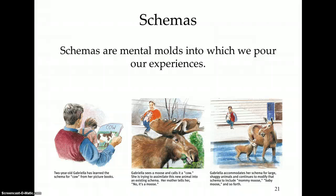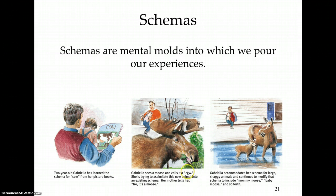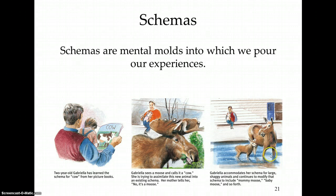Here's an example: two-year-old Gabriella is learning the schema for 'cow.' She sees a cow in her picture book, and then she sees a moose. Remembering that a big animal with four legs is a cow, she calls the moose a cow. She's trying to assimilate this new animal into her existing schema. But her mom tells her no, that's a moose — so Gabriella changes her schema, accommodating it to distinguish a moose from a cow, and continues to modify that schema to include mommy moose, baby moose, and so forth.